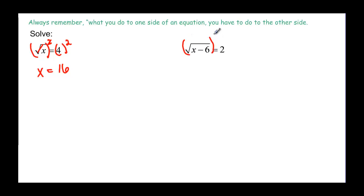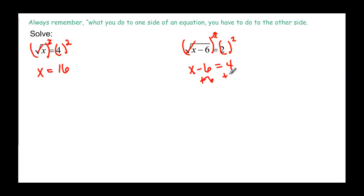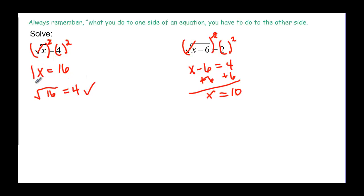If we get a more involved expression underneath the radical, we still just square both sides. The square cancels the square root leaving us with x minus 6, and 2 squared is 4. We have to solve for x, so we add 6 to both sides and x is going to be equal to 10. Now we always have to check these answers. The square root of 16 — is it equal to 4? Yes, so we know that's our answer.